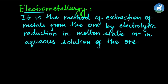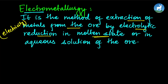In electrometallurgy, we extract metals from ore by electrolytic reduction. The definition: it is the method of extraction of metal from the ore by electrolytic reduction in molten state or in aqueous solution of the ore. The ore is either in molten form or dissolved in aqueous solution.